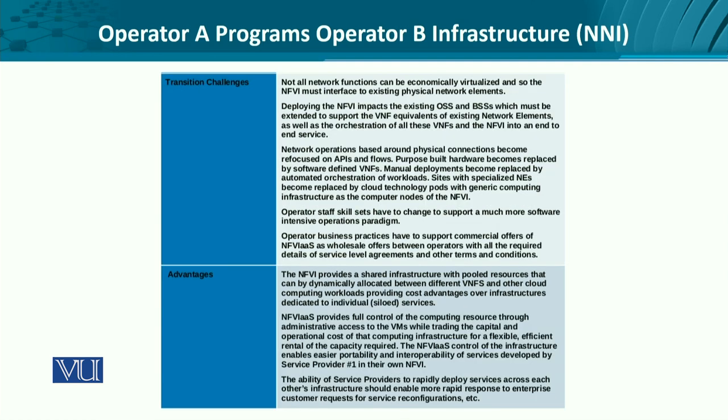The transition challenges include that not all network functions could be virtualized, meaning the jointly hosted and programmable infrastructure must have interfaces for existing network elements, which is not possible in all situations. Similarly, deploying this raises questions about how it will impact the operations support systems and business support systems, since traditionally OSS and BSS do not have virtualization as an inherent feature — requiring an entirely new set of functionality and operations to be orchestrated.